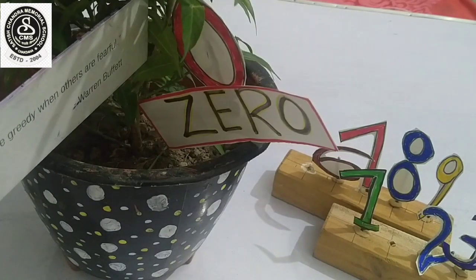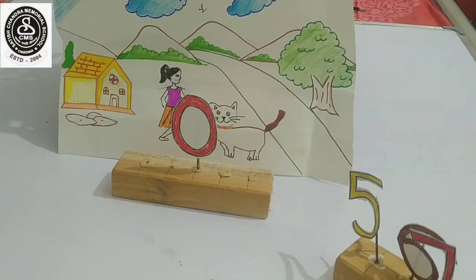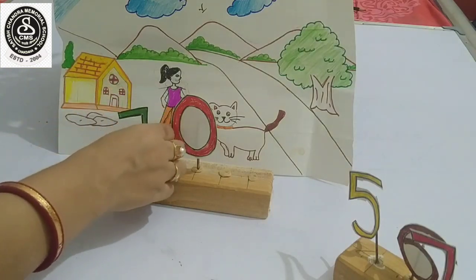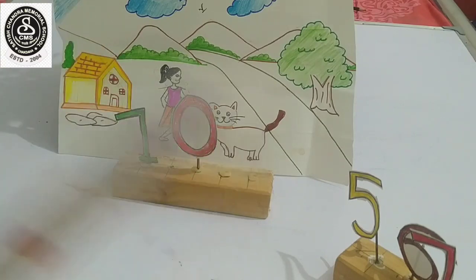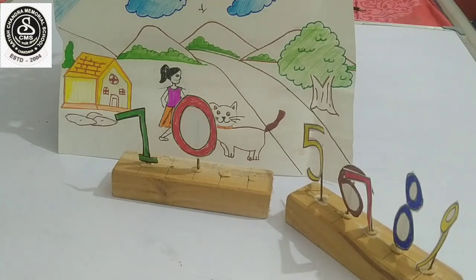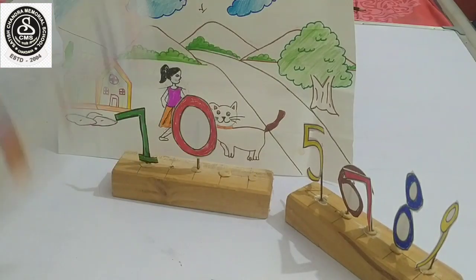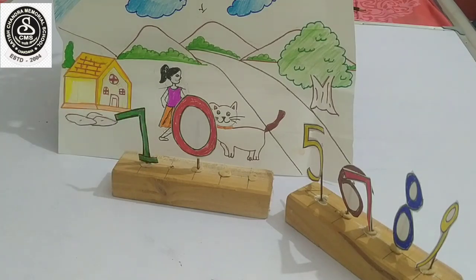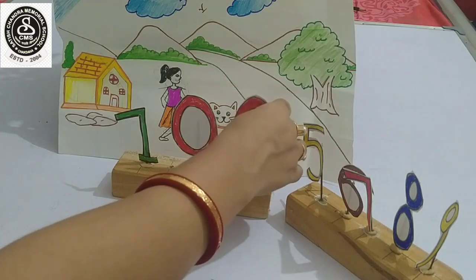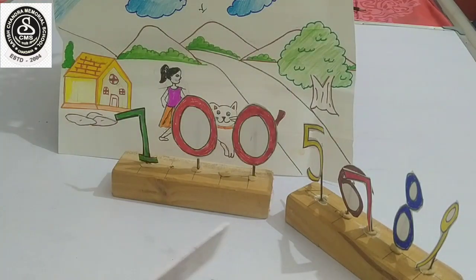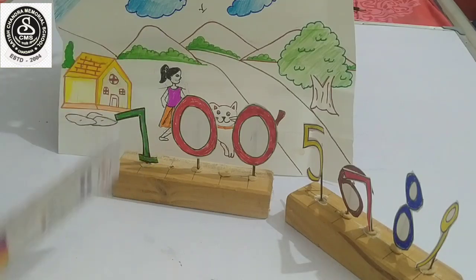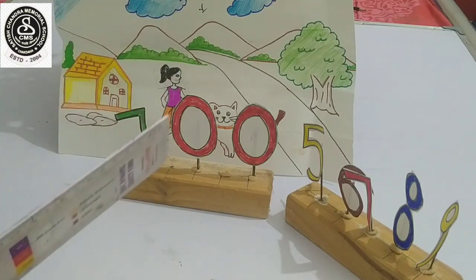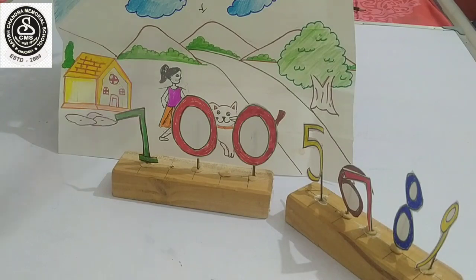The teacher asked number one to stand before zero. Then he asked what is the value of one. All numbers started shouting 10, 10, 10. The teacher added one more zero and asked now what is the value. All the numbers started shouting 100, 100, 100. Now zero became a hero.